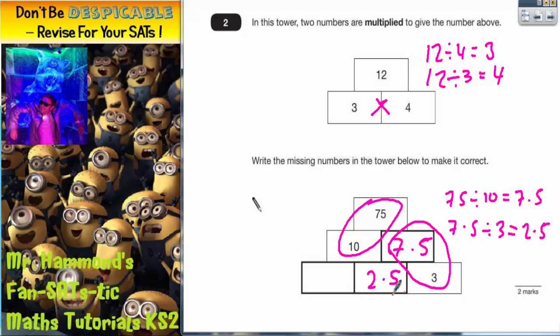Just to double check, 3 lots of 2.5, is it 7.5? Yes, it is. 3 times 2 is 6, 3 times 0.5 is 1.5. Put the two answers together, 6 and 1.5 makes 7.5.